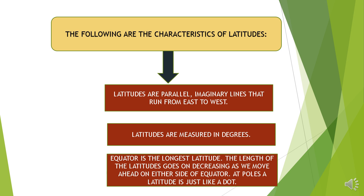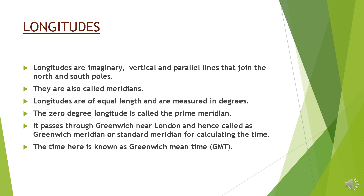Now let us study the characteristics of latitudes. Latitudes are parallel imaginary lines that run from east to west. Latitudes are measured in degrees. The equator is the longest latitude. The length of the latitudes goes on decreasing as we move on either side of the equator. At the poles, a latitude is just like a dot. You have to remember these characteristics.